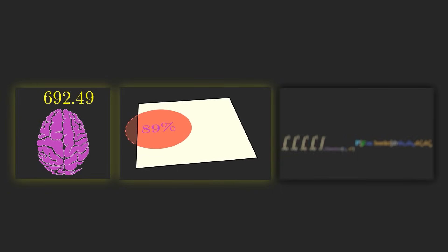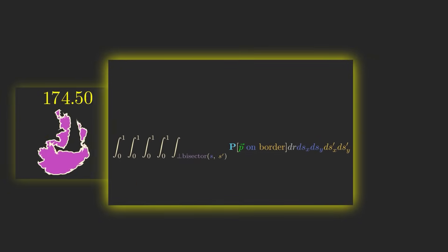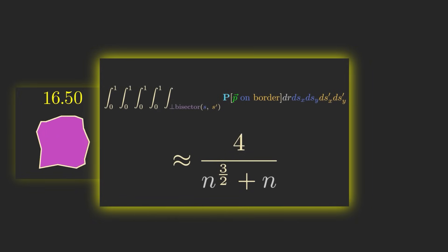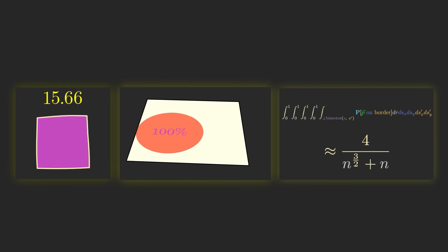If our formula is indeed correct, it implies that this crazy five-dimensional integral roughly equals 4 over n to the 3 halves plus n. Along the way,